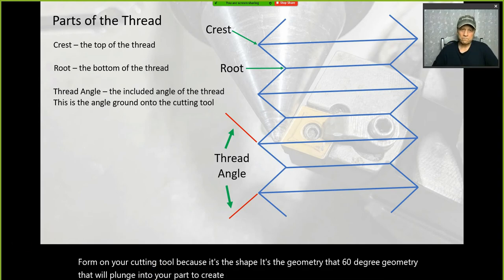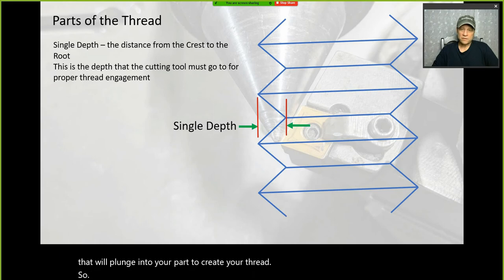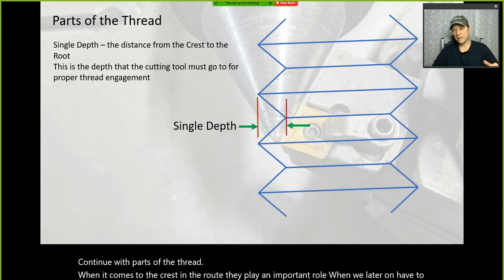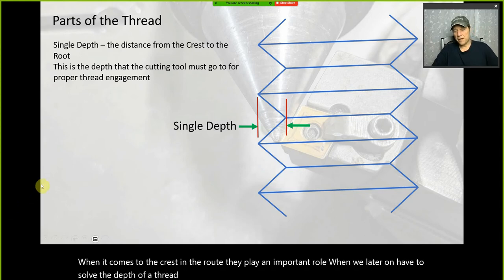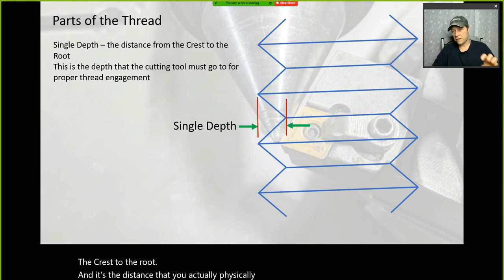Continuing with parts of the thread — the crest and the root play an important role when we have to solve the depth of the thread. The depth of the thread is measured from the crest to the root, and it's the distance that you will physically engage your cross feed on your lathe.